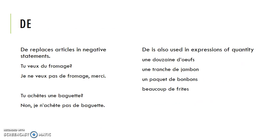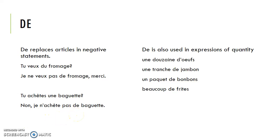And finally, we have de. De is used in a couple of ways. It is used to replace articles in negative statements. For example, tu veux du fromage? — You want some cheese? Je ne veux pas de fromage, merci — I don't want any cheese, thank you. Tu achètes une baguette? Non, je n'achète pas de baguette — I'm not buying any baguettes. So de often corresponds to 'any' in English: I don't want any, or I'm not buying any.